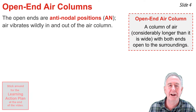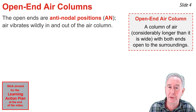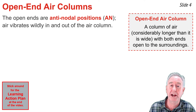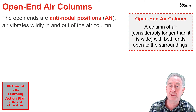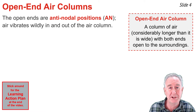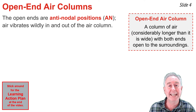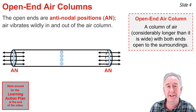An open-end air column is a column of air enclosed within a cylindrical tube that is open to the surroundings at both ends. If you blow over the top of the tube or into the tube, you can force particles of air within the air column to begin vibrating with one of its natural frequencies, or harmonics, and a standing wave pattern would be formed. At the open ends of the tube, air is vibrating wildly in and out of the tube, forming an antinode, as shown here in the diagram.